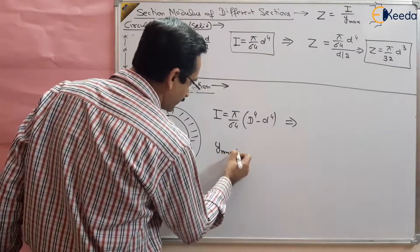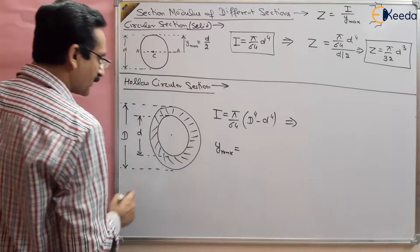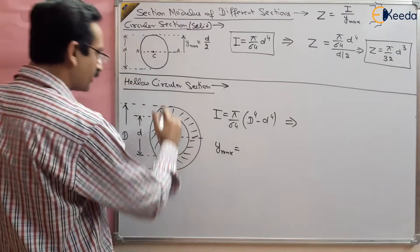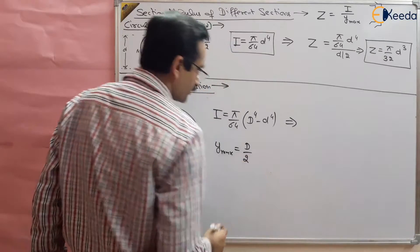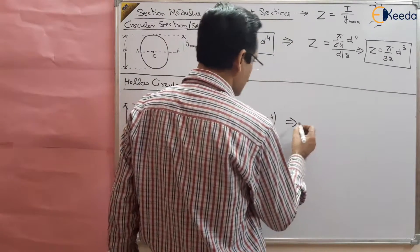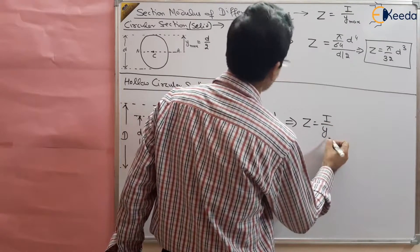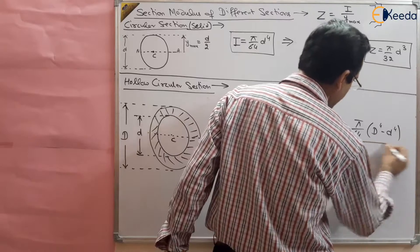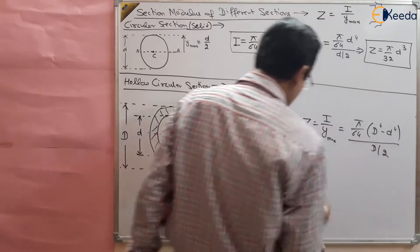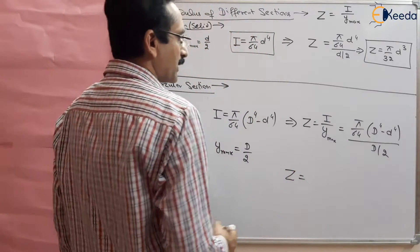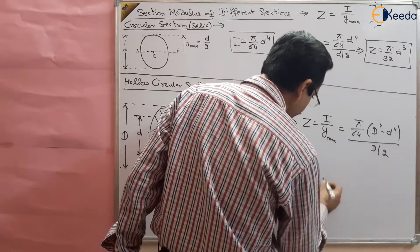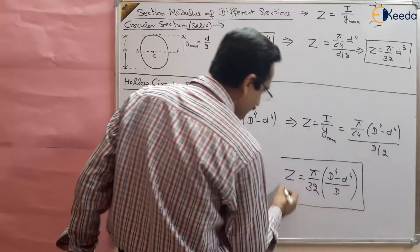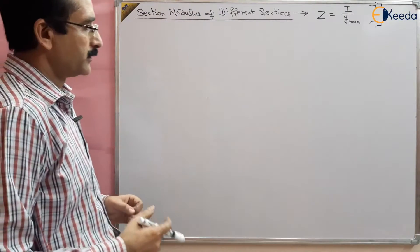The y_max is the distance of the outer fiber from the neutral axis, which is capital D by 2. So section modulus Z = I / y_max = (π/64 × (D⁴ − d⁴)) / (D/2), which gives Z = π/32 × (D⁴ − d⁴) / D. This is the section modulus of a hollow circular section.